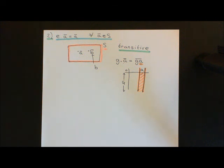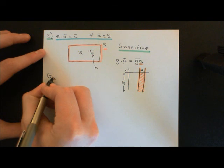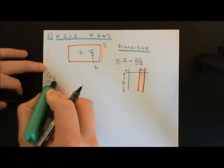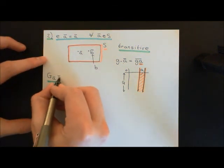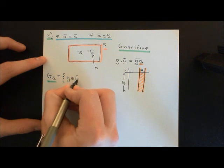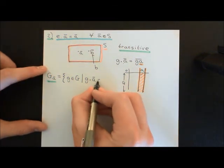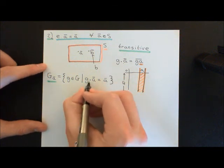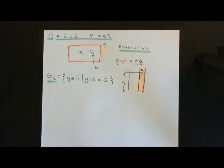What is interesting are the stabilisers for the elements of the set S. Let's consider what the stabiliser of a coset ā in the group G is actually going to equal. The stabiliser is a subgroup of G containing all elements g in G such that g · ā equals ā — all elements of the group which, when acting on the element ā of the set, give back the same answer ā.